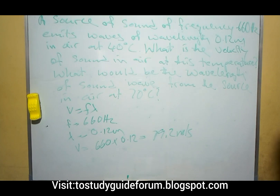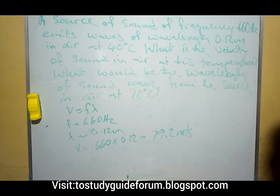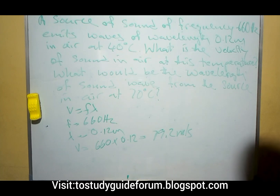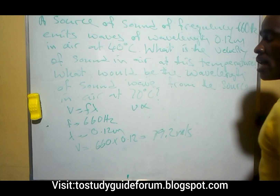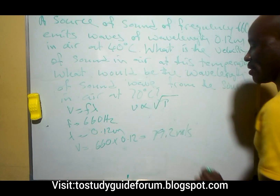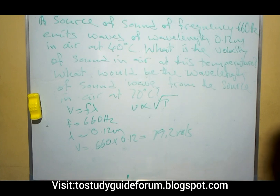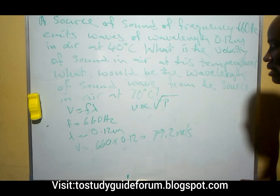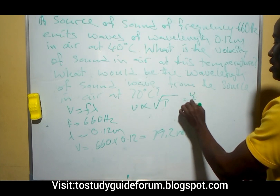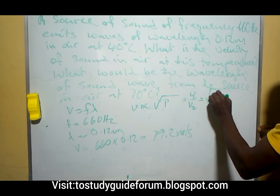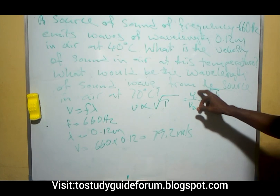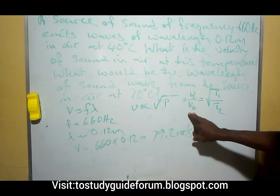Now the second part asks: what will be the wavelength of the sound wave from the source in air at 70 degrees Celsius? Before we do that, remember that the velocity of a sound wave is directly proportional to the square root of temperature in Kelvin. Having that in mind, we will use the formula: V1 over V2 equals the square root of T1 over T2, where V1 is the initial velocity, V2 is the final velocity, T1 is the initial temperature, and T2 is the final temperature.